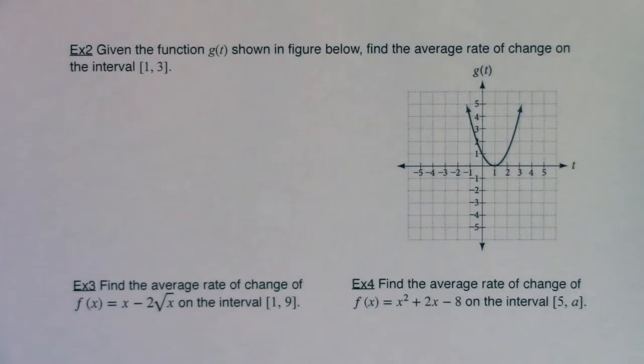Hey Mouth31, we're back with example 2. It says, given the function g of t shown in the figure below, find the average rate of change on the interval 1 to 3.